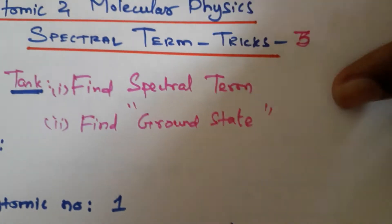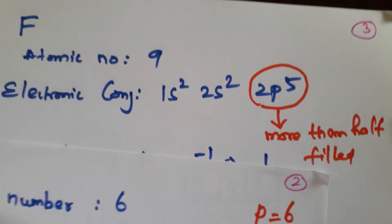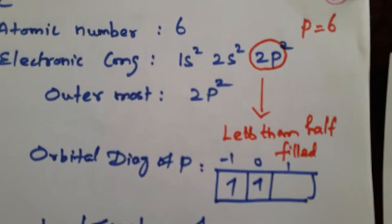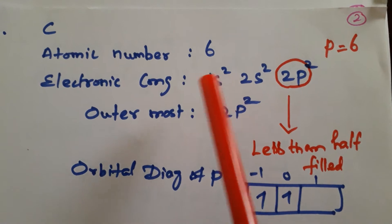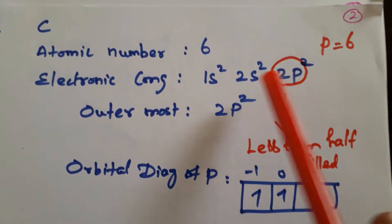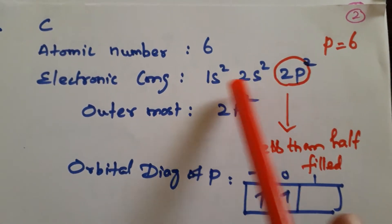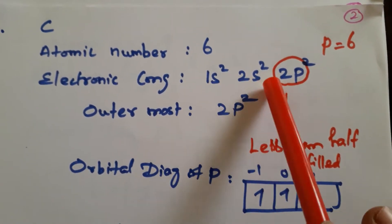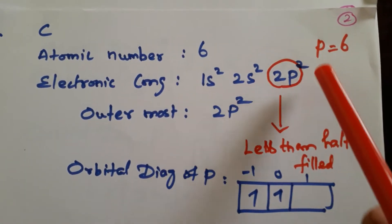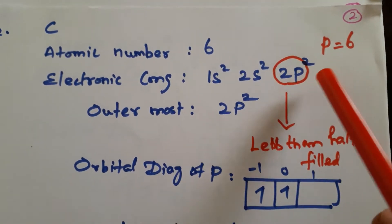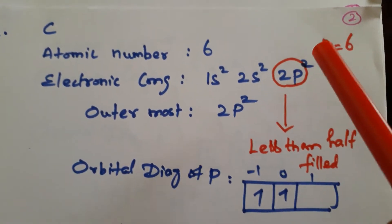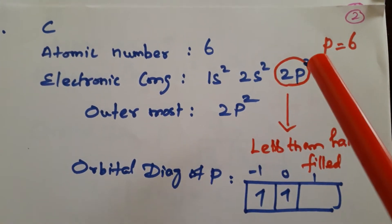Now we will go for this second example. Look at the second one. We have taken this, carbon 6. 1s2, 2s2, 2p2. You need not to worry about these things except the last one. You just see this last term of the electronic configuration alone, whether it is s, p, d. Look at this, what is this? This is p.